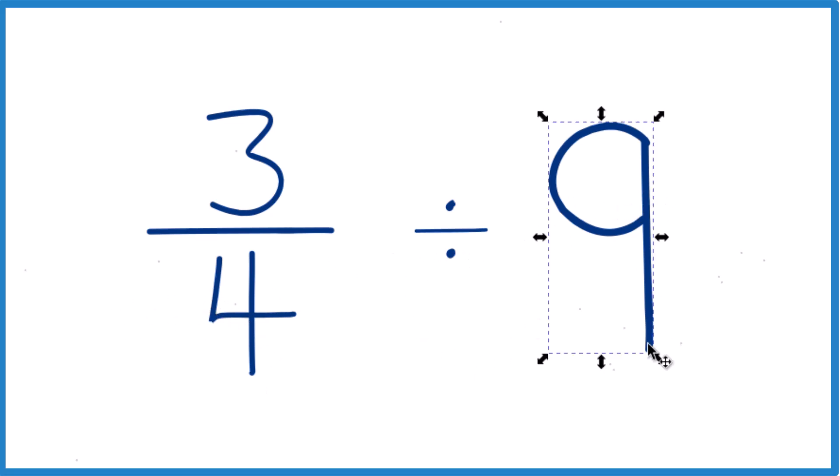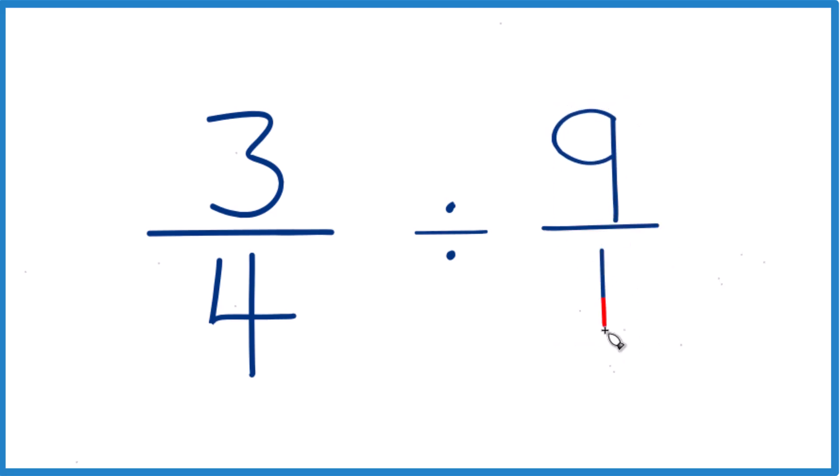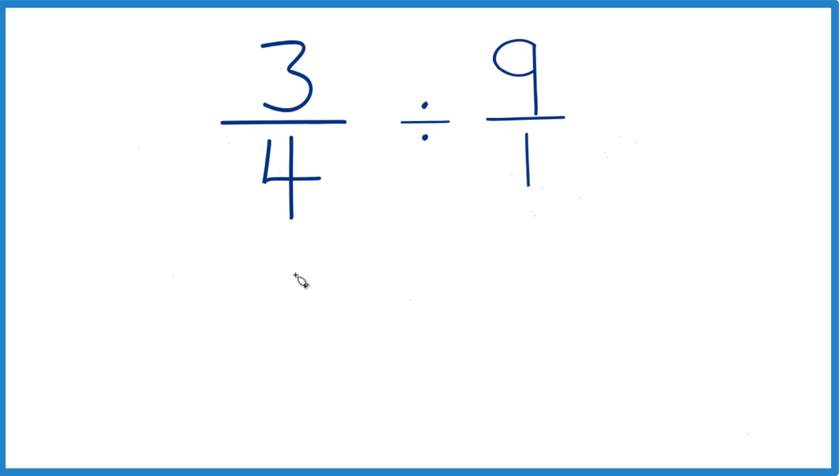Let's take the 9 here. Instead of 9, let's call this 9 over 1. 9 divided by 1, it's still 9, but now we have this lined up nice here. Then we can take our 3 fourths here, and instead of division,